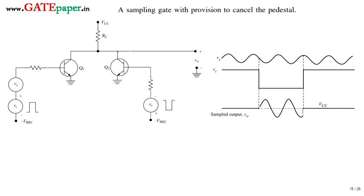We will discuss the bi-directional sampling gate using transistors with a provision to cancel the pedestal. Transistors Q1 and Q2 have their collectors tied together where the output is taken. For the bases of both transistors we apply control signals, but they are of opposite nature — V1 and V2 — and the source signal is applied to the base of Q1 only. Two control signals are required, both exactly opposite of each other.